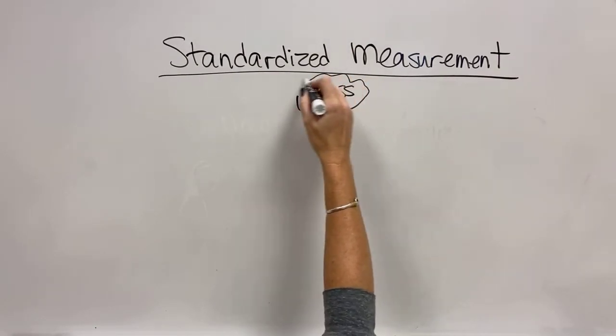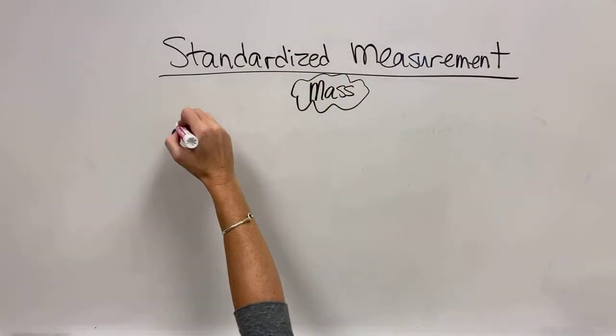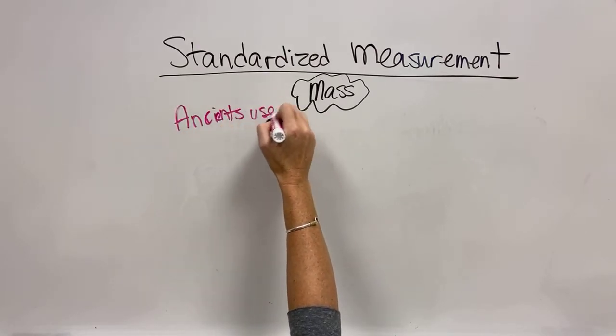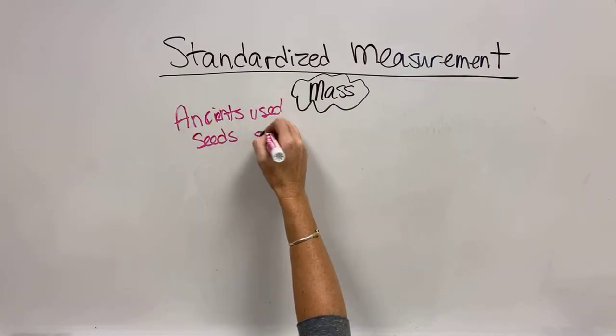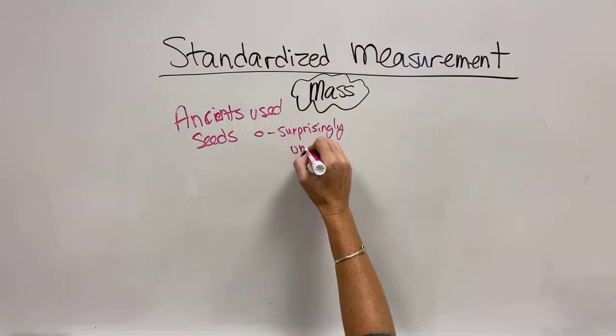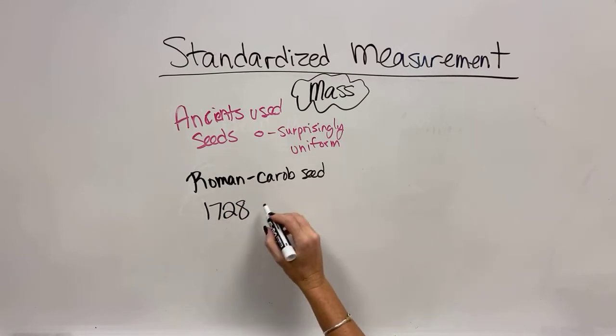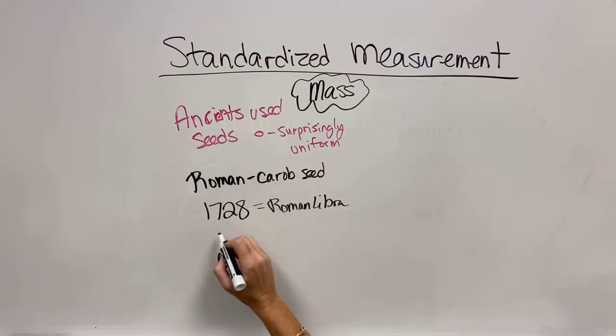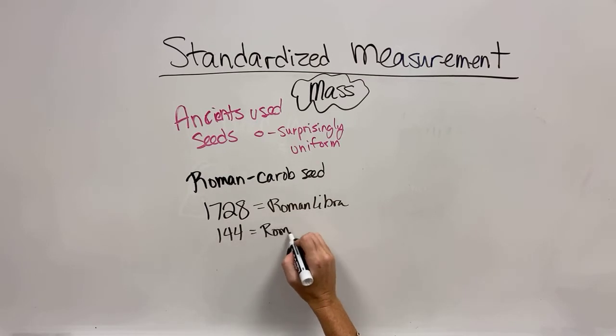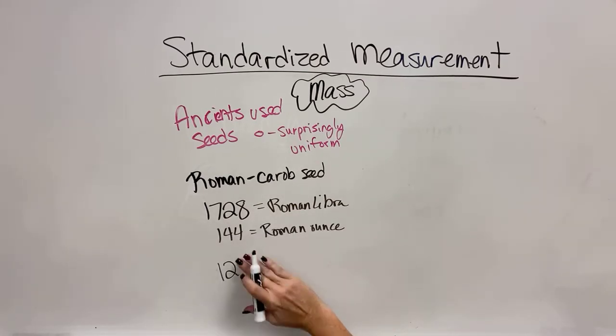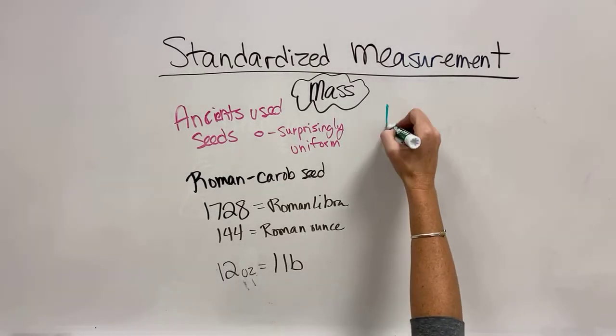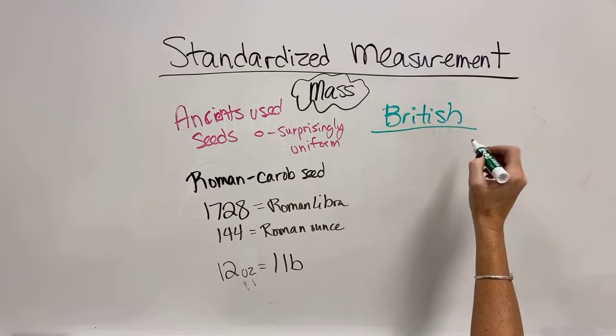Then, the next thing that they had to deal with was mass. Well, like I said, grains were a really common thing back in the day because seeds grow surprisingly consistently and uniform. And so, we could measure the distance of a paper in seeds. And the Romans used the carob seed to measure the mass of things. We would put them on scales or on balances. 1728 carob seeds was a Roman Libra. 144 was a Roman ounce, which means that the Romans had 12 ounces to a pound.